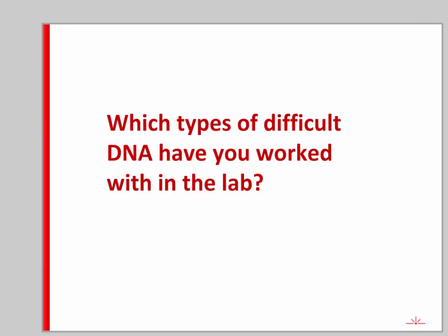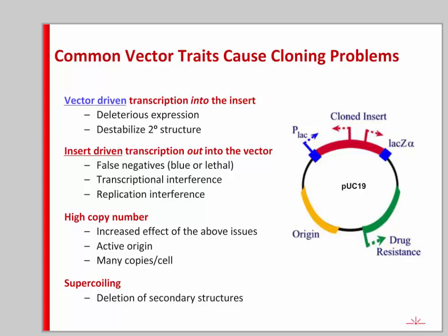It's interesting that not many people had problems with AT-rich DNA. We've actually had quite a few customers contact us about not being able to clone that. I will talk a lot about AT-rich DNA, but also repetitive sequences, GC-rich, and toxic genes. It turns out that a lot of the problems experienced with these DNAs are not necessarily the DNA itself, but the features of common cloning vectors.